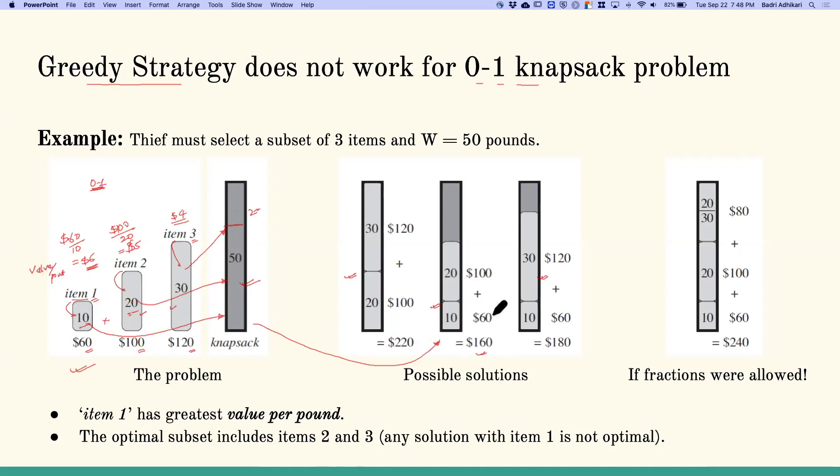However, if this problem was a fractional knapsack problem, then in that case, we would first select item 1, then item 2, then item 3. And this would definitely be the optimal solution if this was a fractional knapsack problem.